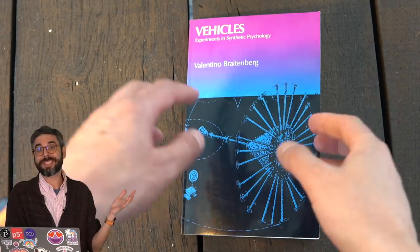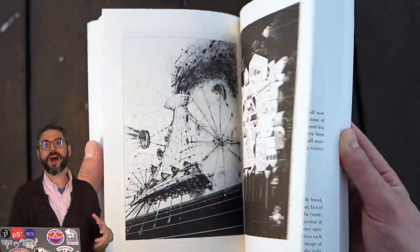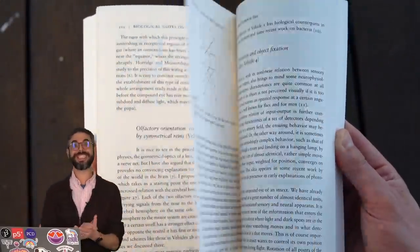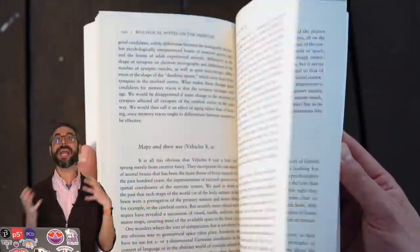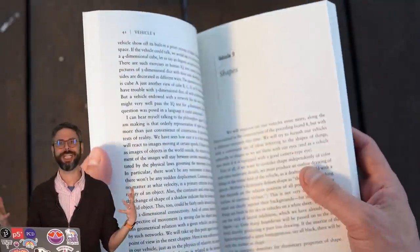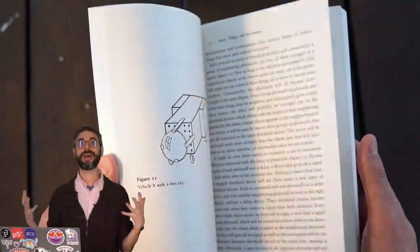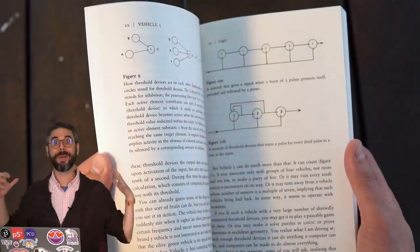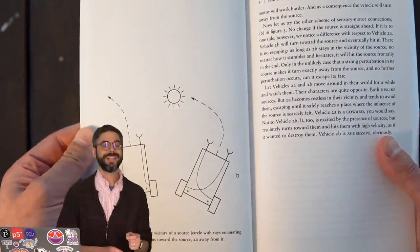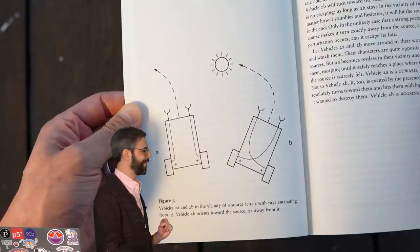One way of looking at this book is an exercise in science fiction. A Breitenberg vehicle is an entity, a vehicle that is a hypothetical self-operating machine that can make decisions about how to behave in an environment based on its sense perception.